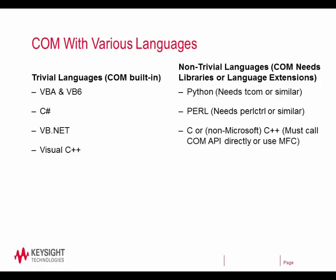This is super convenient and very easy — they have integrated debugging tools, it's really the most straightforward way of doing it. But there are other ways in other languages. The list here is not complete, but Python for example uses TCOM, Perl will use Perl control. You can do it in C and C++ if you call the COM API directly, and for that matter any language that can call Windows DLLs directly can take advantage of COM by calling the COM API. This is involved — to suggest that it's a trivial implementation would be horribly remiss. You will definitely want to come into that knowing COM, or bias towards one of the languages that either has a built-in module like Python or Perl, or simply handles it directly like VBA, C#, VB.NET, etc.